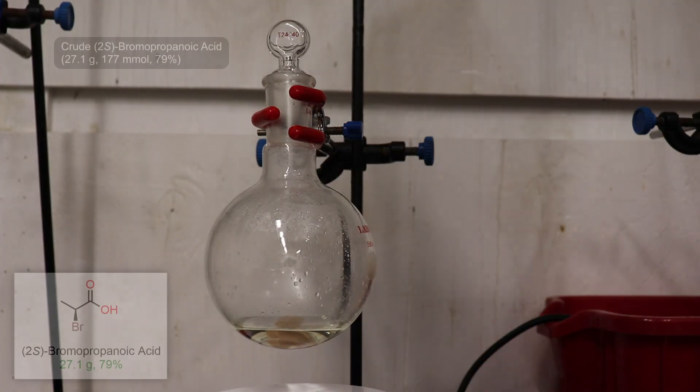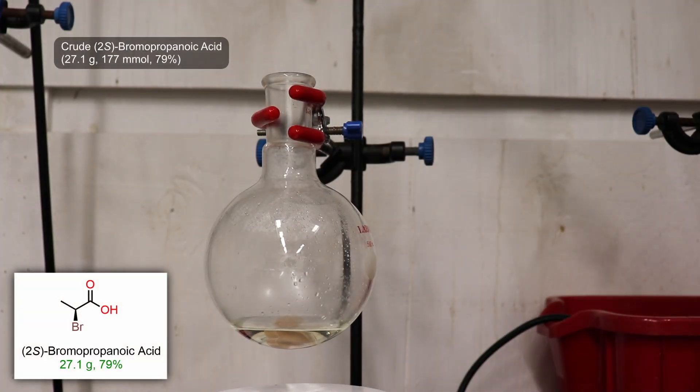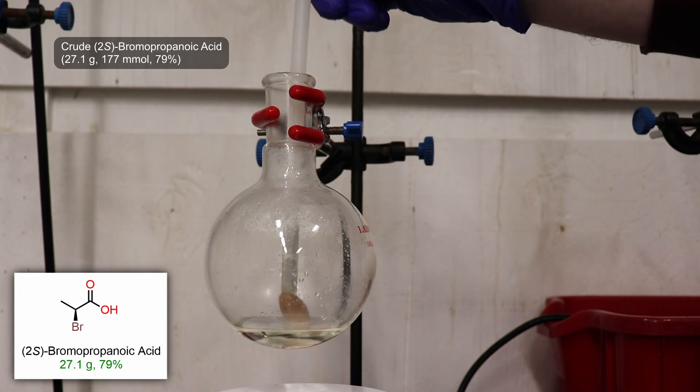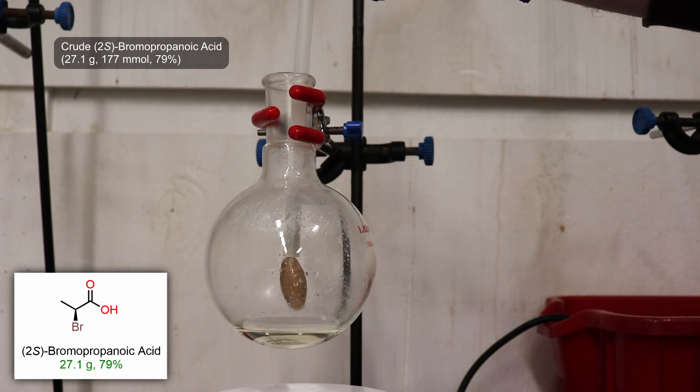From this, I obtained 27.1 grams of a clear liquid with a slight yellow tint. This represents a crude yield of 79% from the starting alanine.